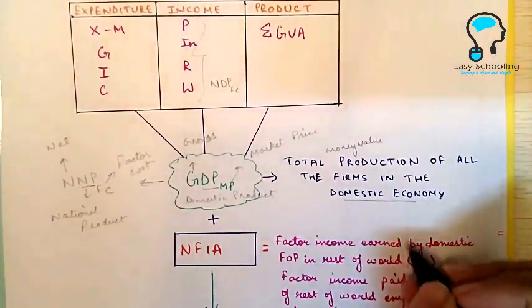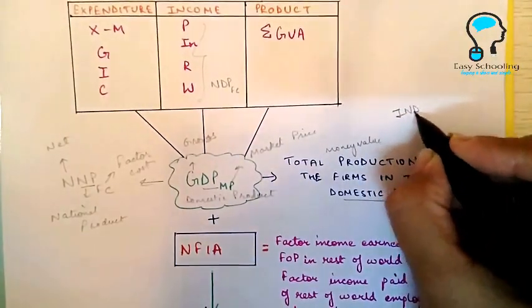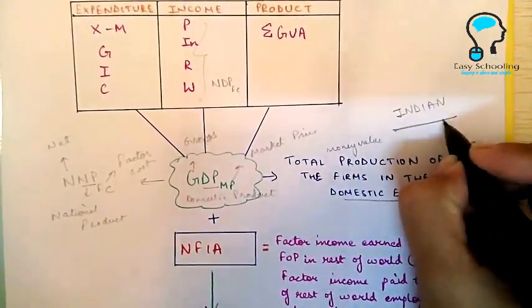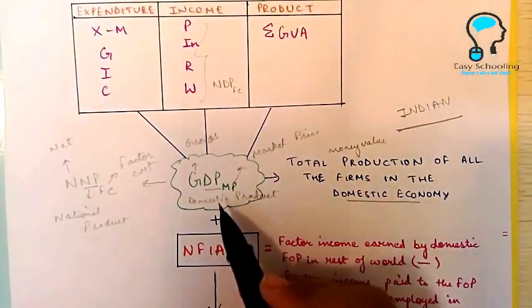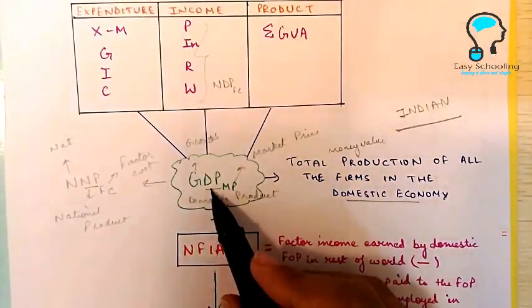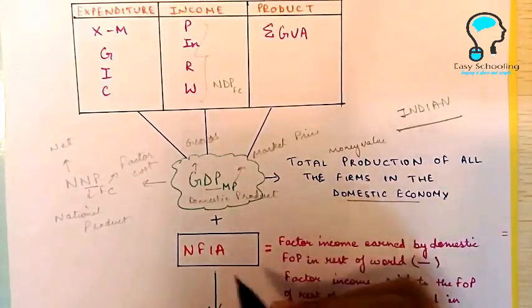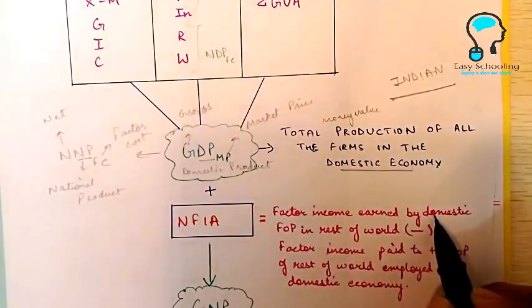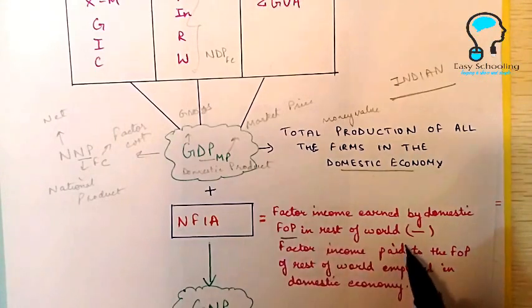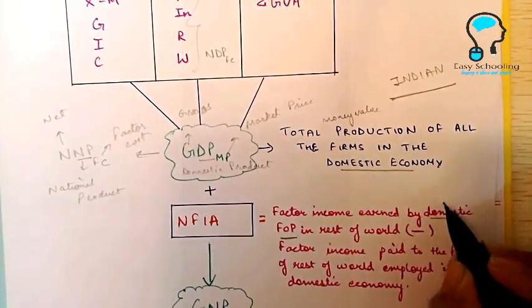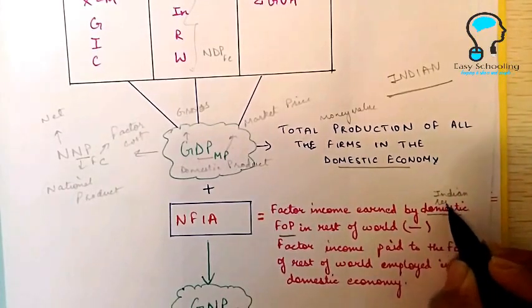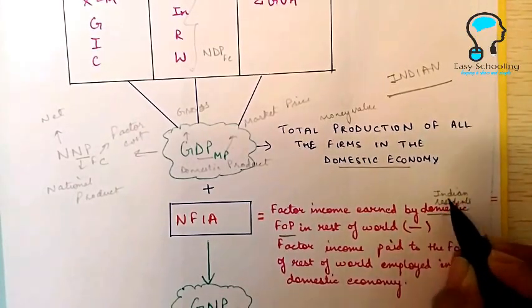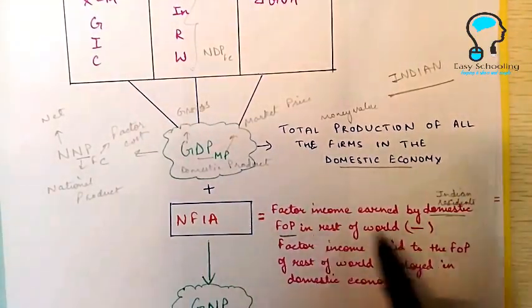Suppose we are talking about Indian economy. Now when we have to calculate national product from domestic product, we have to add factor income earned by domestic factors of production in rest of the world. Domestic factors of production means Indian residents. Indian residents are the domestic factors of production.